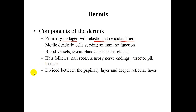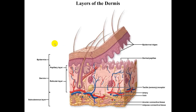The dermis is divided between the papillary layer and the deeper reticular layer. Here is a figure showing the layers of the dermis. We've already discussed the epidermis. As you look at the dermis, you can see it is broken into the papillary layer and the reticular layer, with the papillary layer being the thinner of the two. The papillary layer is comprised of dermal papillae, which contain blood vessels and receptors for things such as touch.